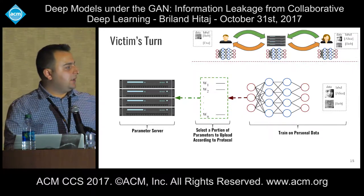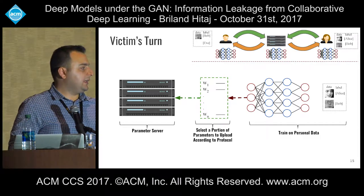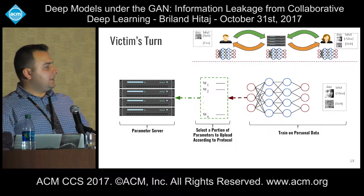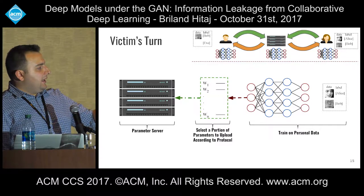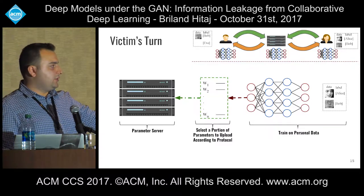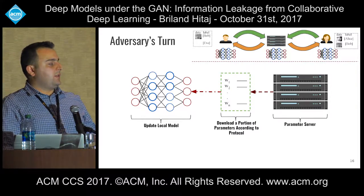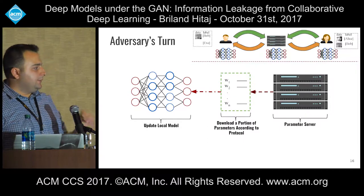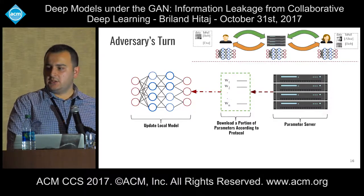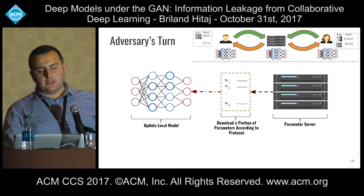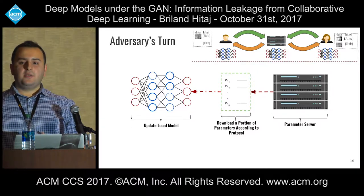When it is the victim's turn, the victim trains the local model on their personal data — Alice and Bob's records — and selects a portion of the updated parameters to share on the parameter server, finalizing one training turn. When it is the adversary's turn, they download a portion of the parameters from the parameter server according to the protocol — they can download a percentage or all of them — and update the local model. This means the adversary's model has now learned something new about the victim's training data.